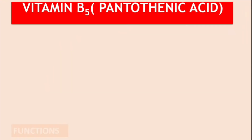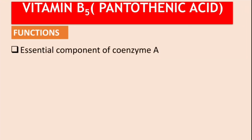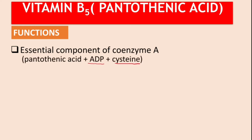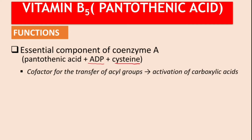Vitamin B5, or pantothenic acid, is an essential component of Coenzyme A, together with ADP and cysteine. More specifically, it acts as a cofactor for the transfer of acyl groups, which leads to the activation of carboxylic acids.